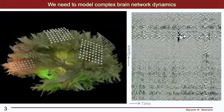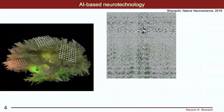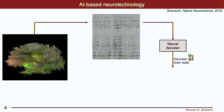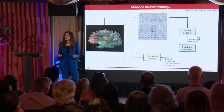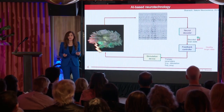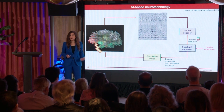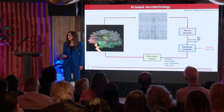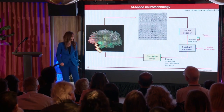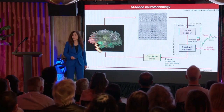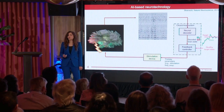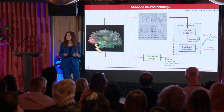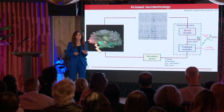In order to regulate these signals, we envision building a closed-loop system that would decode from them an underlying state of the brain — let's say mood in depression — and then use that as feedback within a controller that would then adjust the therapy parameters, such as stimulation activity and frequency, to take the brain to a target healthy state.